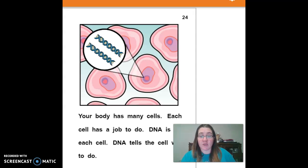Your body has many cells. Each cell has a job to do. DNA is in each cell. DNA tells the cells what to do. So we read that in the unit book. DNA is a ladder shaped thing that is in every cell and it's the boss of the cells.